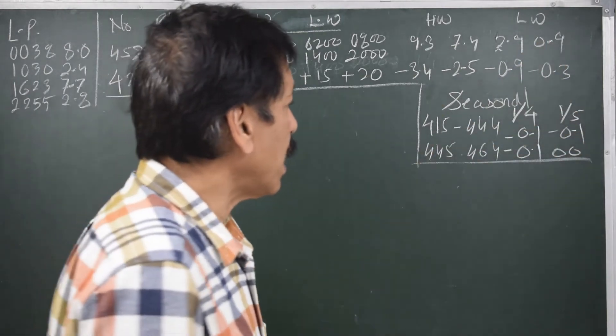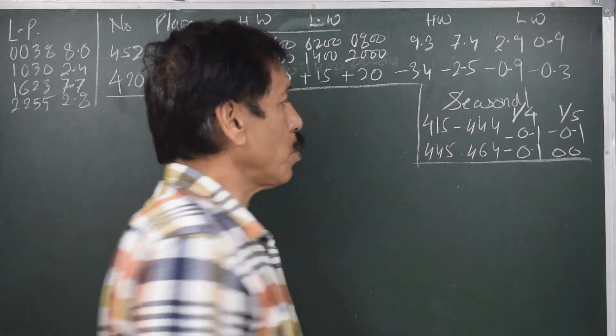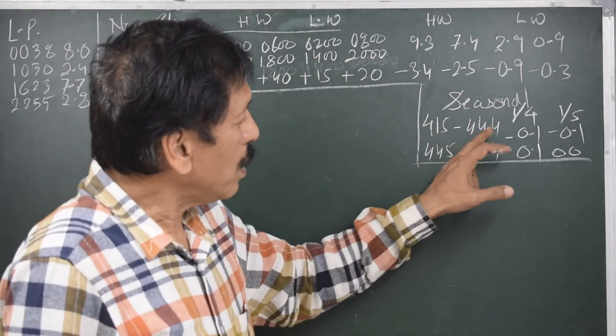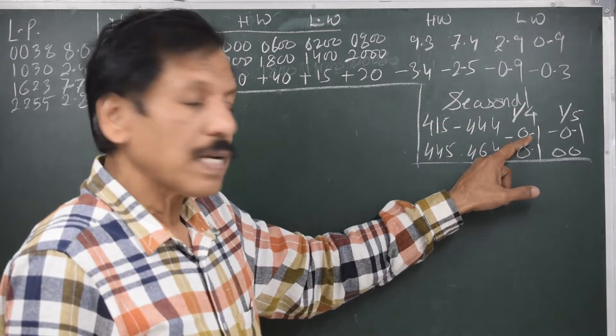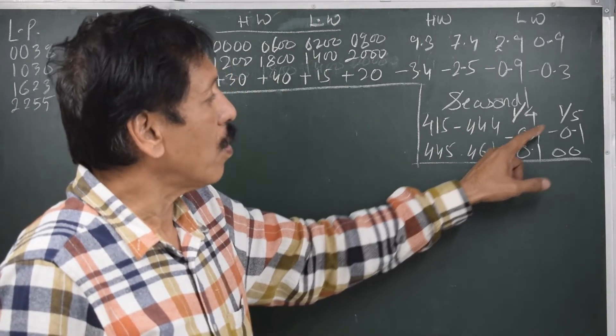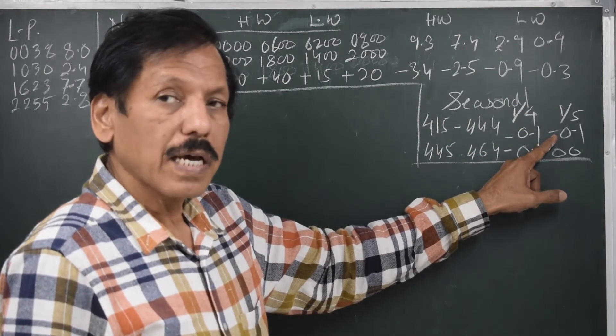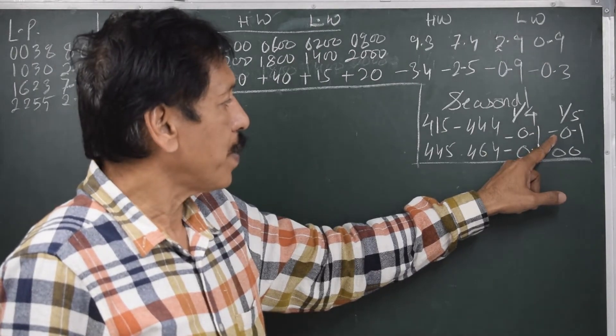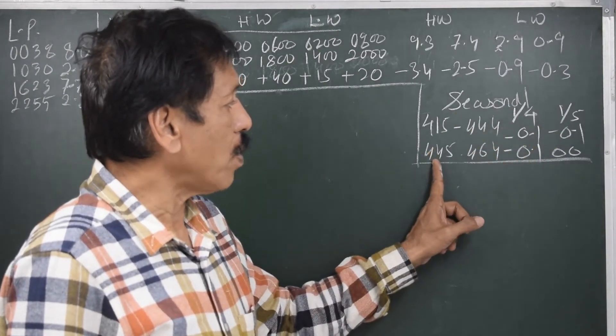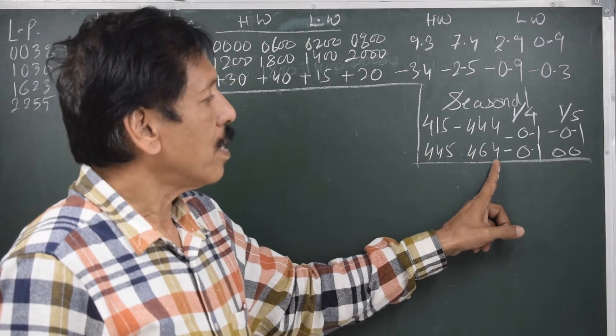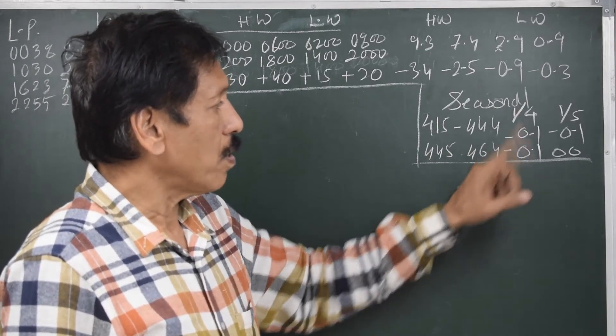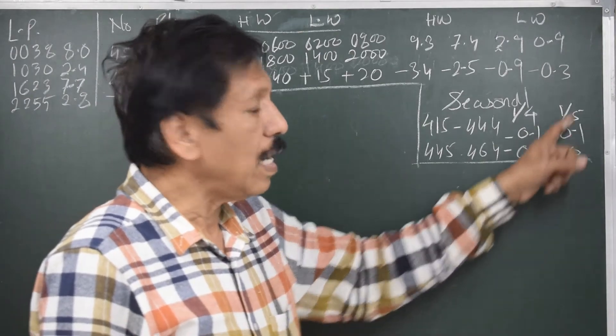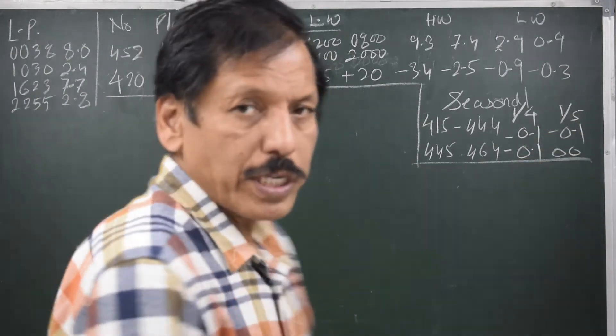The seasonal correction also I have taken down for the two ports. 415 to 444, on the 1st of April the seasonal correction is minus 0.1 and on the 1st of May the seasonal correction is minus 0.1. If you consider 445 to 464, the seasonal correction is minus 0.1 on the 1st of April and 0.1 on the 1st of May. So we proceed now.